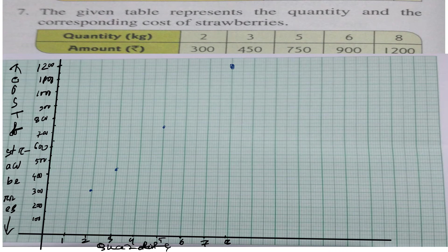Now you can join all the points. Join them with a scale only — use a ruler to draw the line graph.